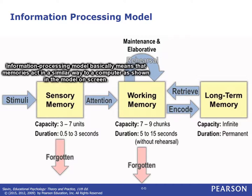If we study this diagram, we can see a visual diagram of the way the brain operates and processes information. The information processing model basically means that memories act in a similar way to a computer. A computer handles information by putting it into working memory and then coding it into longer-term storage. Similarly, when we see something — a stimulus — that's going to go into an area called sensory memory, which can handle about three to seven different units of memory.